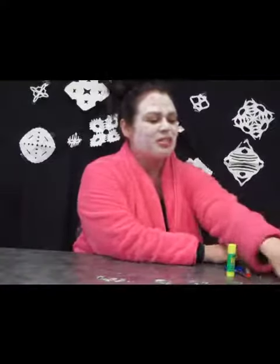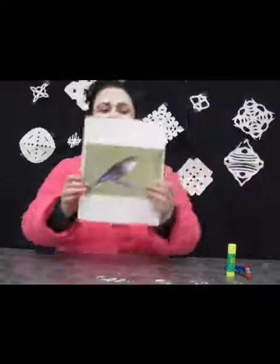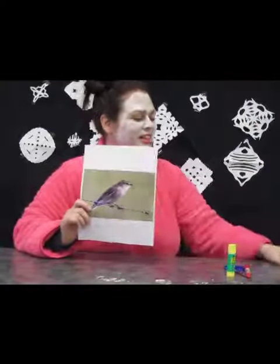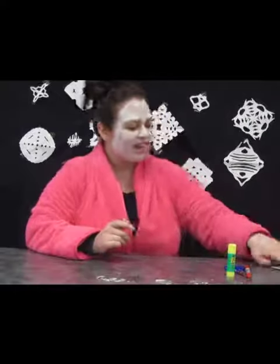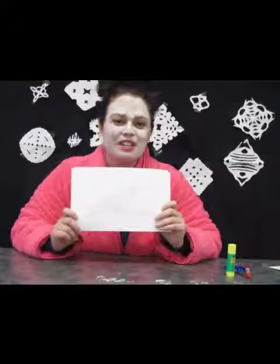We are going to be making a mosaic collage today and I want you to choose a subject matter of something that flies. You're going to choose a contour line drawing to start off with. This is the picture that I'm going to use — this is my inspiration. It's a bird, something that flies, and I started off making a contour line drawing of my bird.